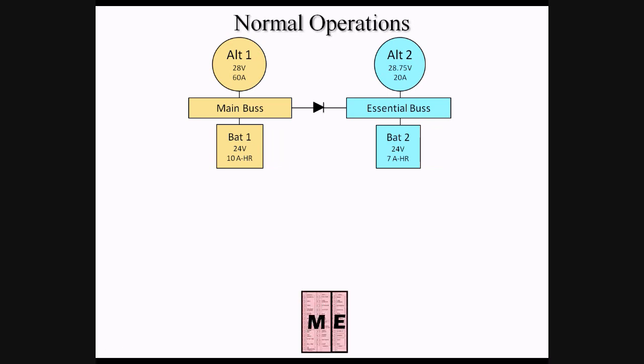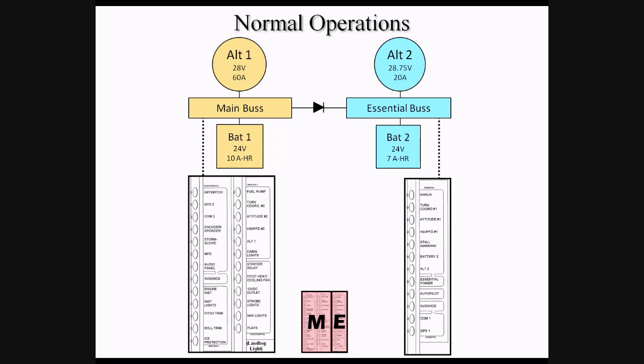Looking at what items are powered by each bus, we see that the two rows of circuit breakers farthest forward are powered by the main bus, while the row of circuit breakers farthest aft, closest to the pilot, is powered by the essential bus. Here is an expanded view of each segment of the circuit breaker panel connected to its appropriate bus.